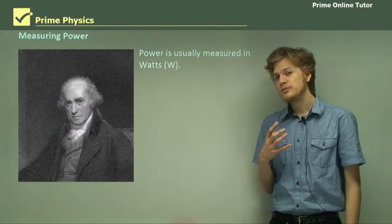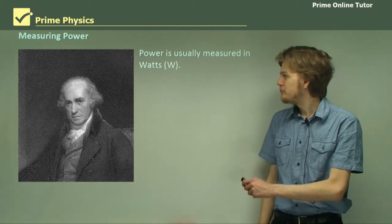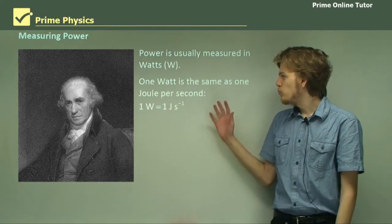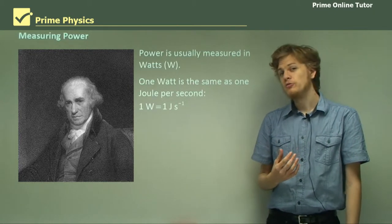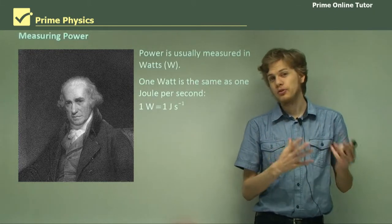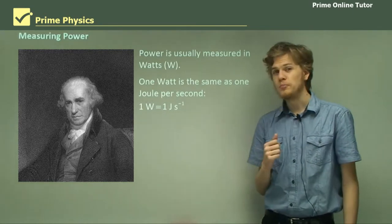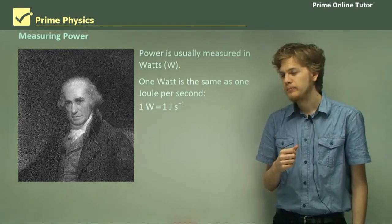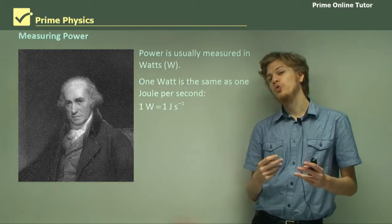Now we usually measure power in watts, named after this fellow here, James Watt. So 1 watt is the same as 1 joule per second. Remember that power is equal to energy per second, or energy per time, which means the units should match up as well. So 1 watt is the flow of 1 joule per second.